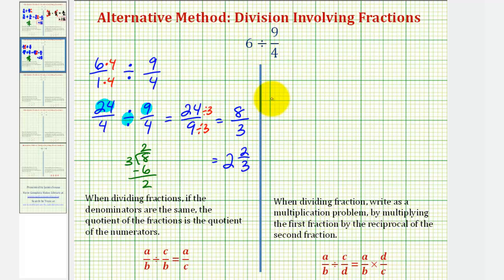Now let's also find the quotient using the traditional algorithm, which means instead of dividing by c over d, we can multiply by the reciprocal, which would be d over c. So we'd write 6 as 6 over 1. And then instead of dividing by 9 fourths, we'll multiply by 4 ninths.